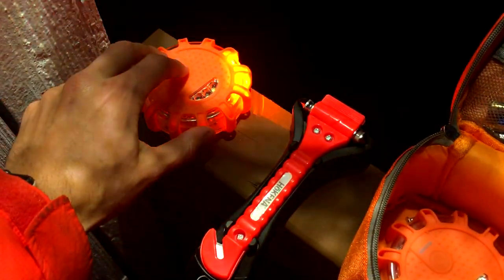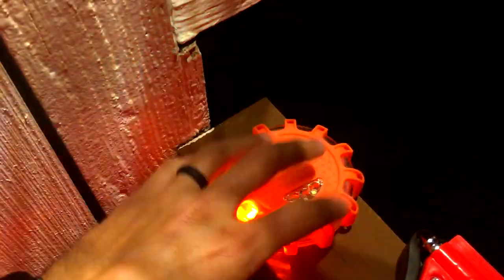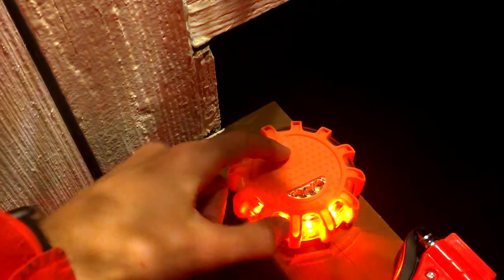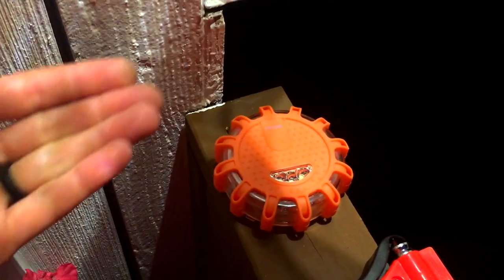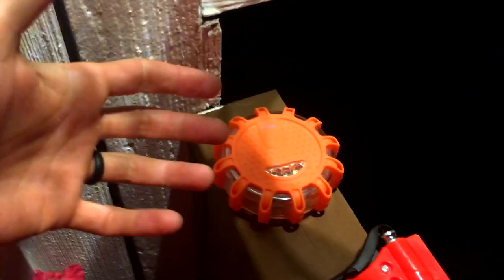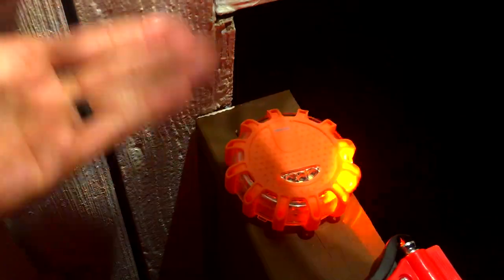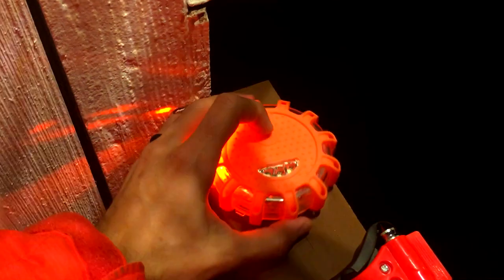One little side feature: if you want to turn this off and you don't want to cycle through all nine functions, just hold it down for about three seconds and then it turns off. If you want to start it back up again exactly where you left off, you just push it down and voila, it goes on.